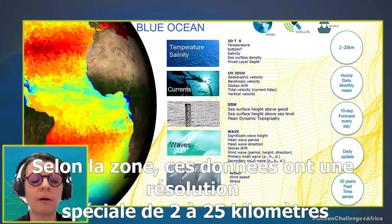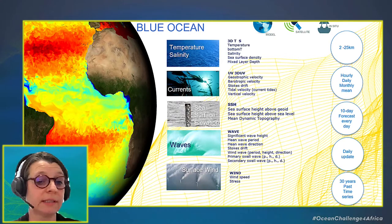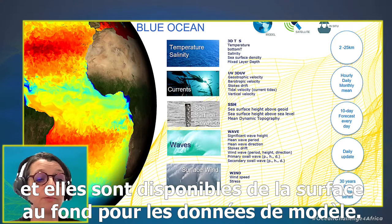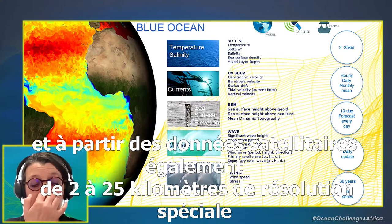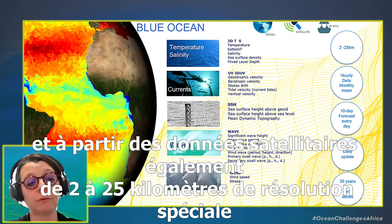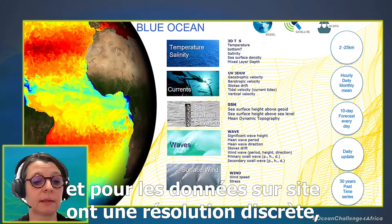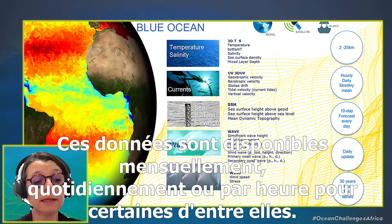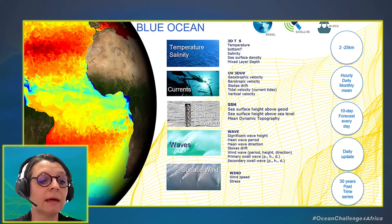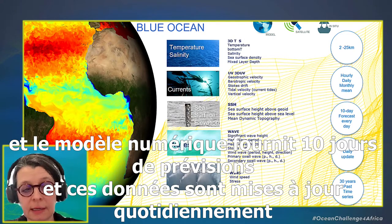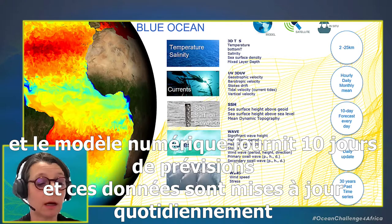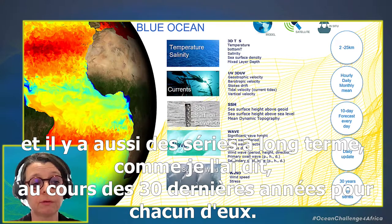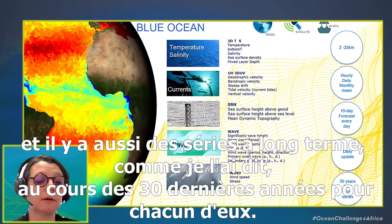Depending on the area, this data has a spatial resolution from 2 to 25 kilometers, available from the surface to the bottom for model data. Data is available in monthly and daily means, with some at hourly resolution. Numerical models provide 10-day forecasts updated daily, and there are also long time series going back 30 years.